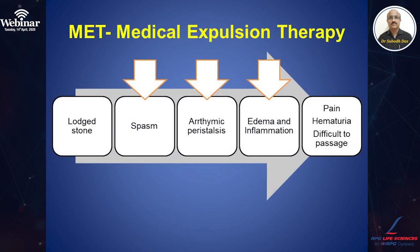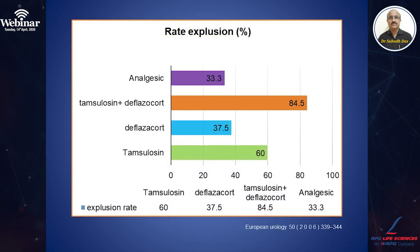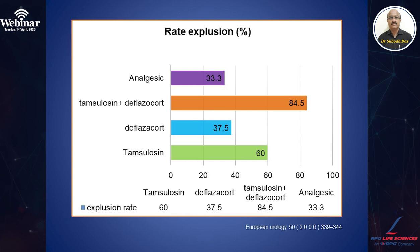To summarize: a large stone gives rise to spasm, arrhythmic peristalsis, edema, and inflammation, leading to pain, hematuria, and difficulty passing the stone. The efficacy of various agents in medical expulsion therapy: analgesics alone give a 33.3% expulsion rate; deflazacort alone has a 37.5% success rate; alpha blocker tamsulosin alone has a 60% success rate; and the combination of tamsulosin plus deflazacort achieves a success rate as high as 84.5%.